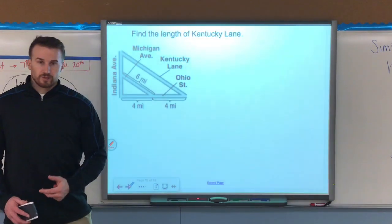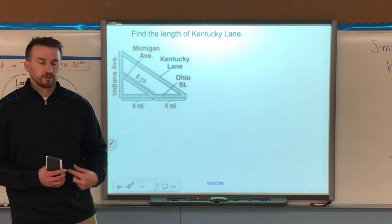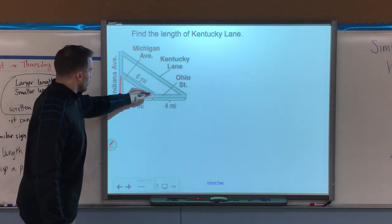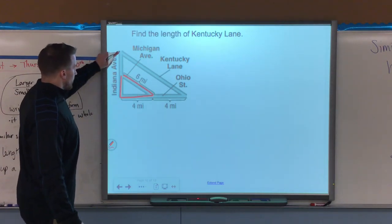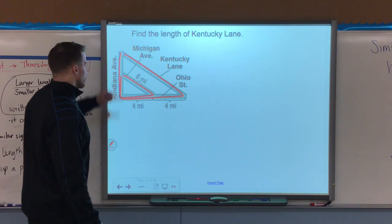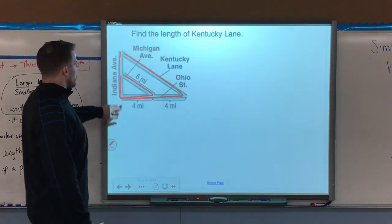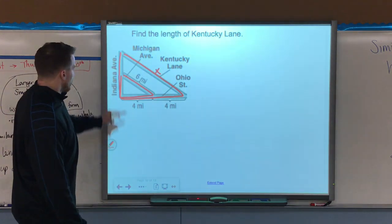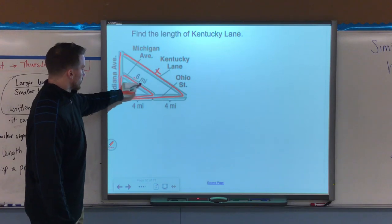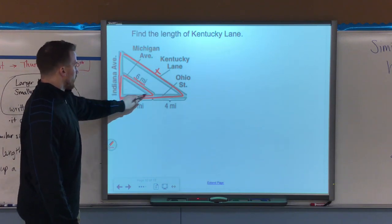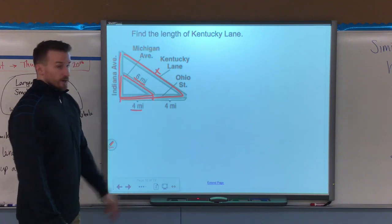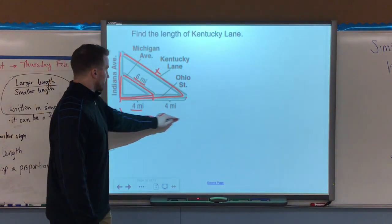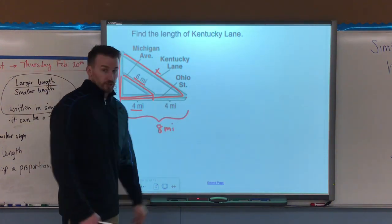Now, next one, these similar figures are within each other, so we got to make sure that we can see them and visualize it. I have a right triangle here with these streets and I have a large one over the top of it with those corresponding streets. It says find the length of Kentucky Lane, which is this street out here. I know that Michigan Avenue is six miles long. I know that part of Ohio street from here to here is four miles and I know additionally it's four miles to the very end. So that means the entire length of it is eight miles. That's important to know.